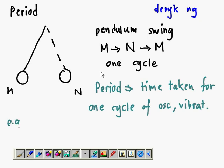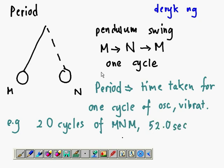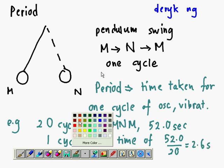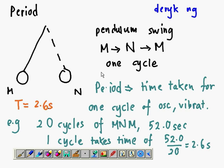For example, if I observe 20 cycles of M to N to M and it has taken 52.0 seconds to achieve that, what I need to know is the time taken for one cycle. One cycle takes 52.0 divided by 20. Time is on top in the calculation, so the answer is 2.6 seconds. The period is 2.6 seconds. If you want to calculate period, use time on top.